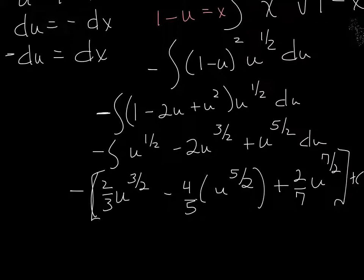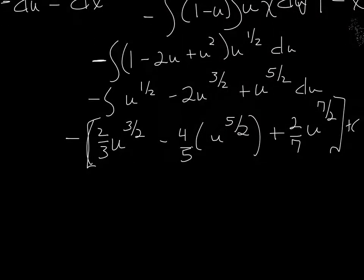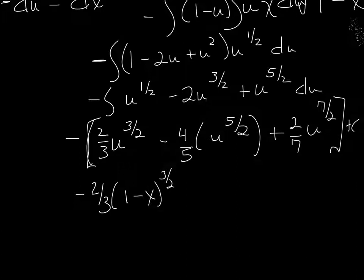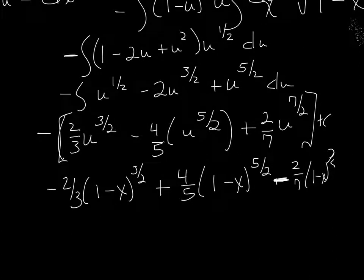So we're going to have negative of: u to the 3/2 times 2/3 minus 2u to the 5/2 times 2/5 — so it's 4/5 because you multiply by the 2 — plus u to the 7/2 times 2/7, plus C. Now if you want to, you can go ahead and distribute that negative, but we also have to substitute back in what we said u was, which was 1 minus x. So we get negative 2/3 times (1 minus x) to the 3/2 plus 4/5 (1 minus x) to the 5/2 minus 2/7 (1 minus x) to the 7/2, plus C.